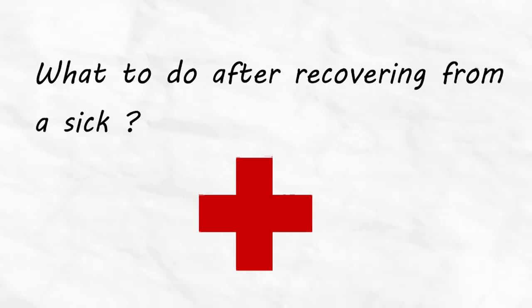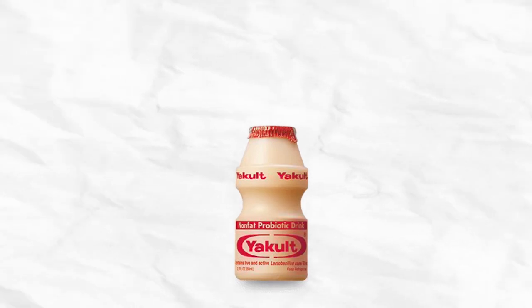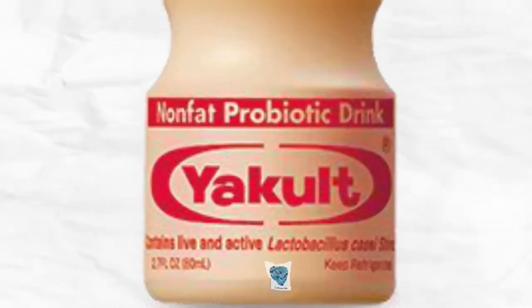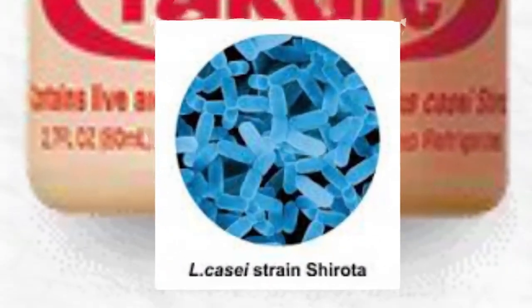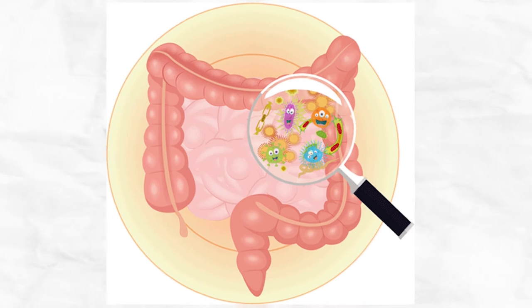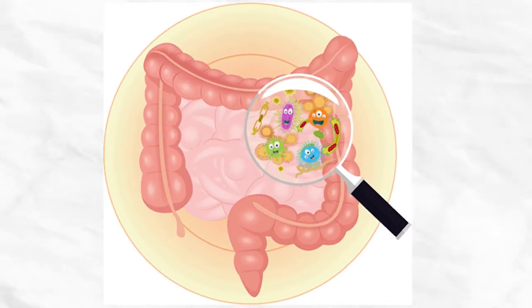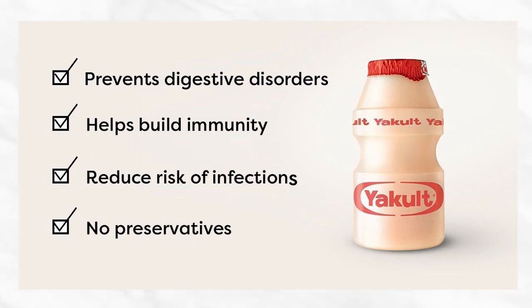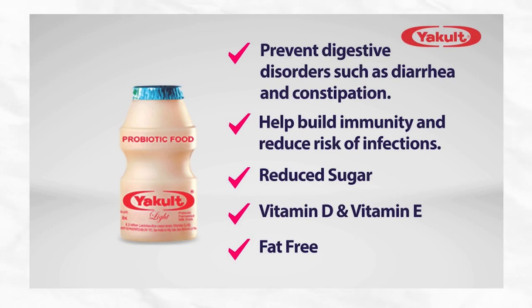What to do after recovering from an illness? Consider a probiotic drink like Yakult. A bottle of Yakult contains around 8 billion live and active good bacteria. Consuming 1 to 2 bottles of Yakult a day may help improve digestive balance and overall wellness. Drinking Yakult is an easy step to deal with antibiotic-related microflora disruption, replenishing your gut's microflora after taking antibiotics.